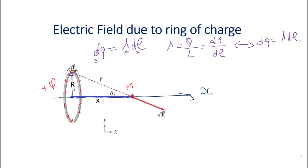The definition of the electric field element: dE equals dq times Coulomb constant divided by r squared. The direction of this element of electric field — if the charge is positive, the electric field will be going away from the charge. If the charge was negative, the electric field would be going toward the charge. We have it positive, so it will be going away from the charge.